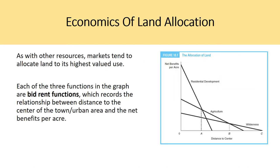As with other resources, markets tend to allocate land to its highest valued use. Each of the three functions in the graph are bid-rent functions, which record the relationship between distance to the center of the town or urban area and the net benefits per acre. You're comparing three functions: residential development, agriculture, and wilderness. Residential development receives the most net benefits overall — it creates more jobs and more benefits in housing — so the bid-rent function is much steeper than for agriculture and especially wilderness.